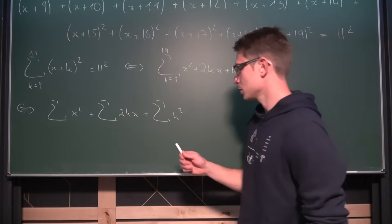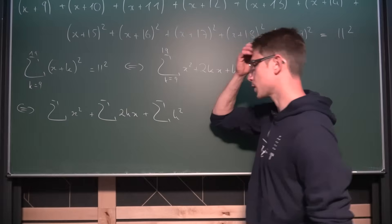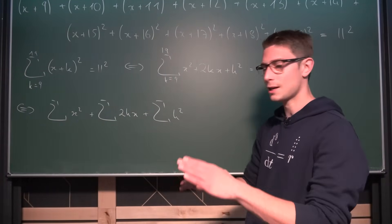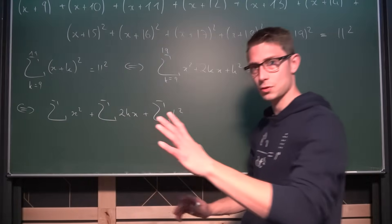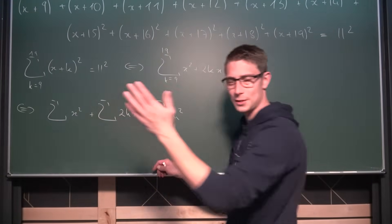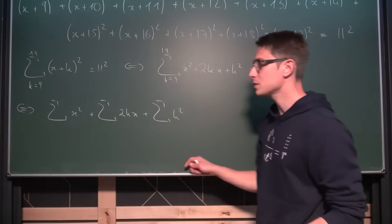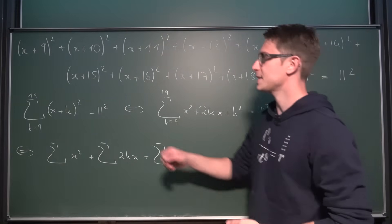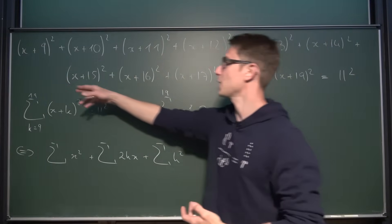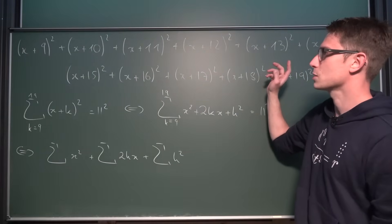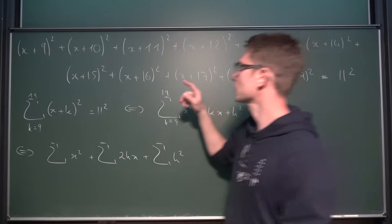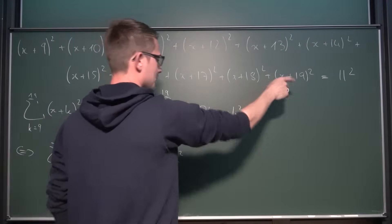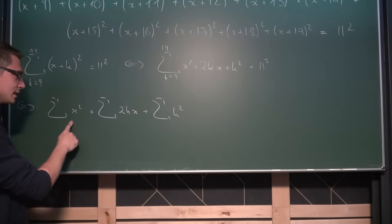Now we have those terms where x is constant with respect to k, so we can drag it out of the sigma notation. Don't get fooled here — if you sum up all those x² terms, it's not like an integral where it becomes independent of x. We're basically summing over a finite index. If we multiply all of those binomial formulas out, we get the x² term exactly as many times as we have parentheses — from 9 to 19 that amounts to 11. So what we actually get here is 11x².